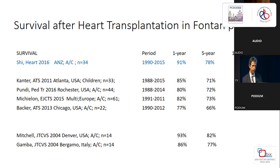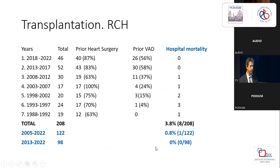These transplantation statistics show that nowadays 80% of our patients are redo, most have a VAD — 56% have had a VAD — and the ratio of congenital heart disease compared to dilated cardiomyopathies is approximately one-third congenital to two-thirds dilated cardiomyopathy.